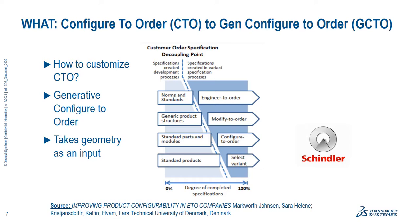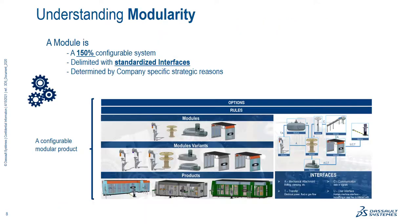Their goal was to move from engineering to order to configure to order — and what they came up with we've labeled generative configured to order. It's different from configure to order where you try to solve for every possible condition using a product lifecycle management system. In generative configured to order, you have all the components for all the solutions, but you don't generate them in advance. Instead, you have a generative approach that can make any solution as an output — it takes geometry and other inputs and generates the output on demand.